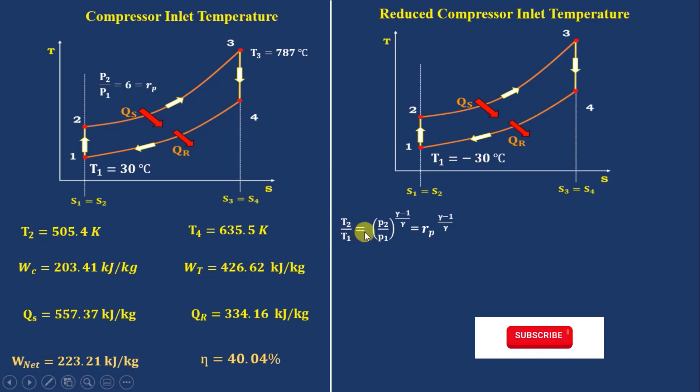So from isentropic relation, T2 divided by T1 equals P2 divided by P1 to the power gamma minus 1 divided by gamma. P2 divided by P1 is nothing but Rp. This equation can be written as T2 equals Rp to the power gamma minus 1 divided by gamma times T1.